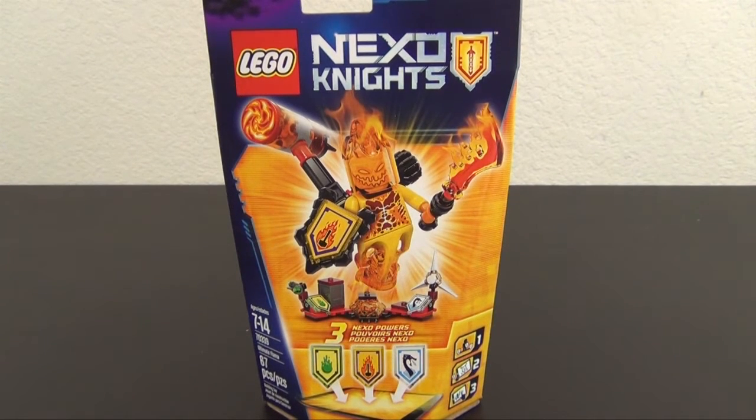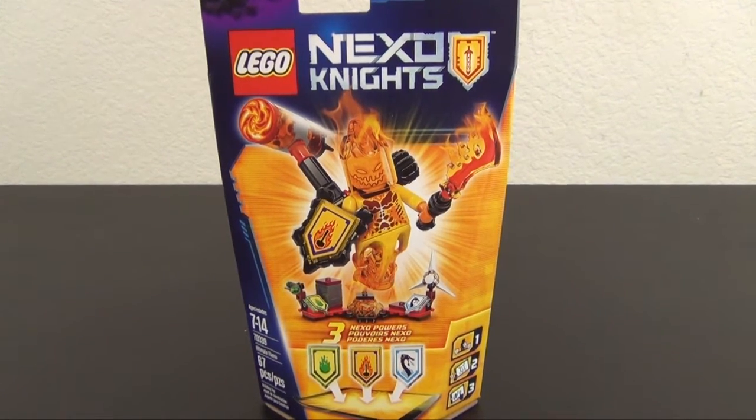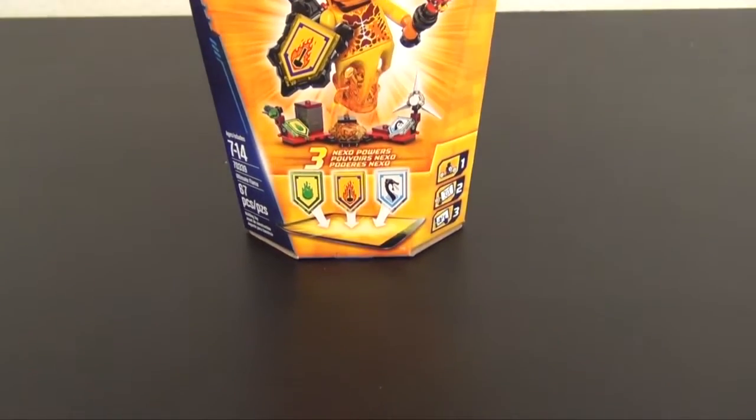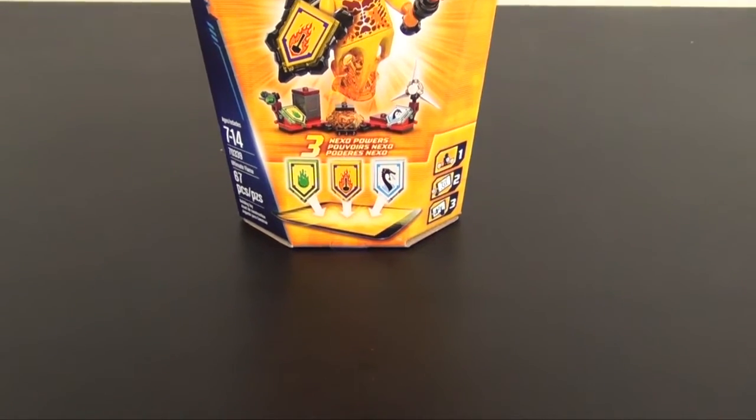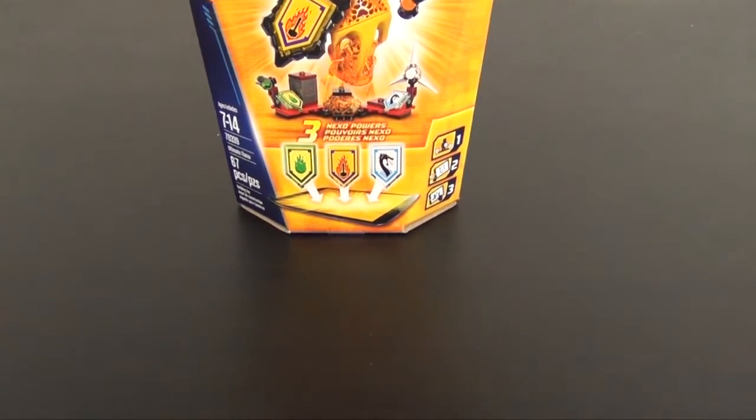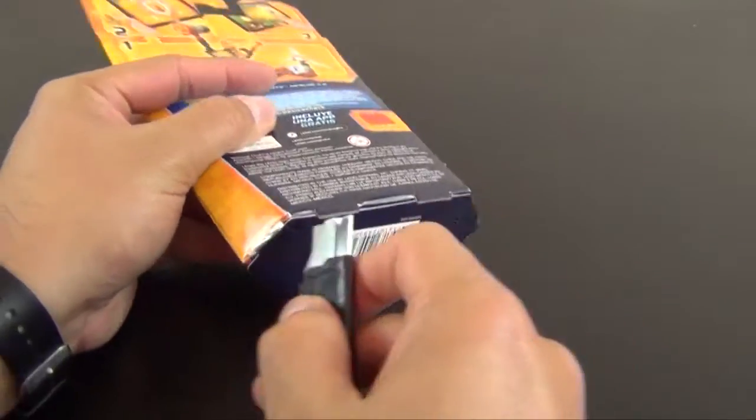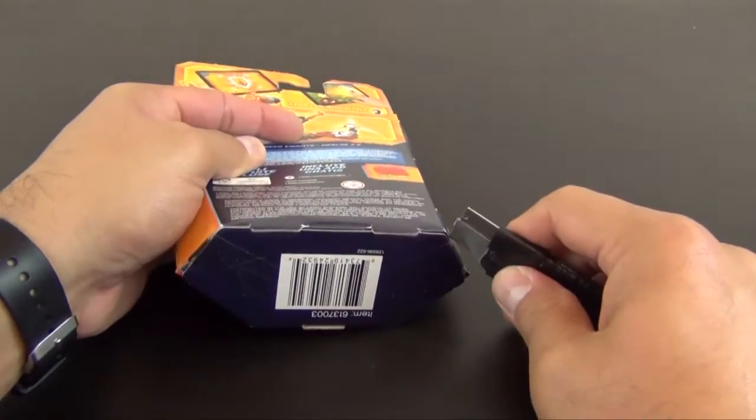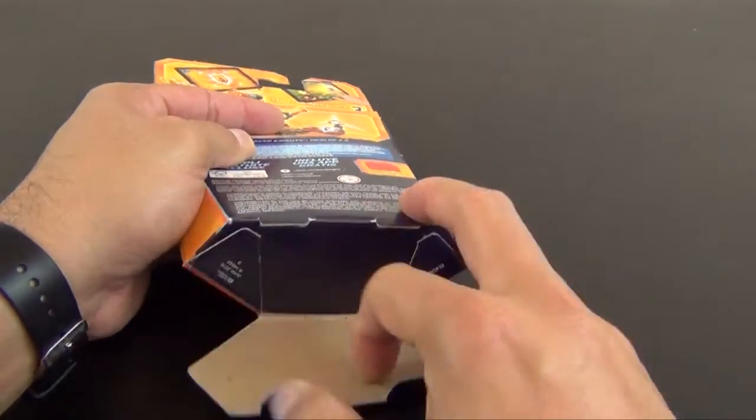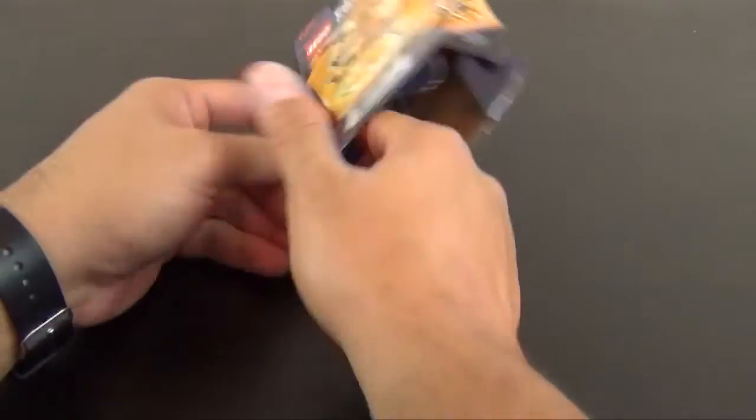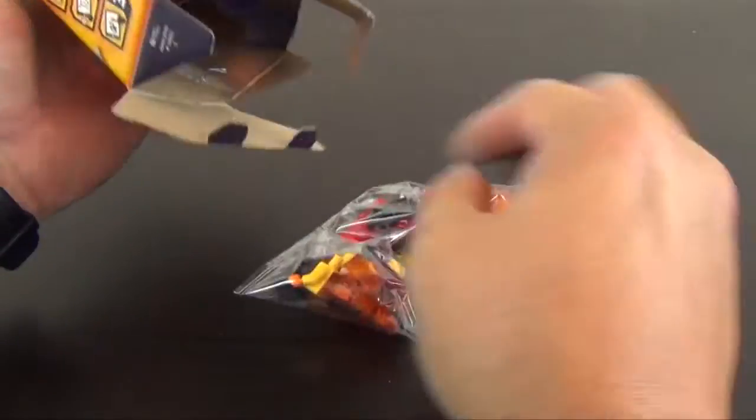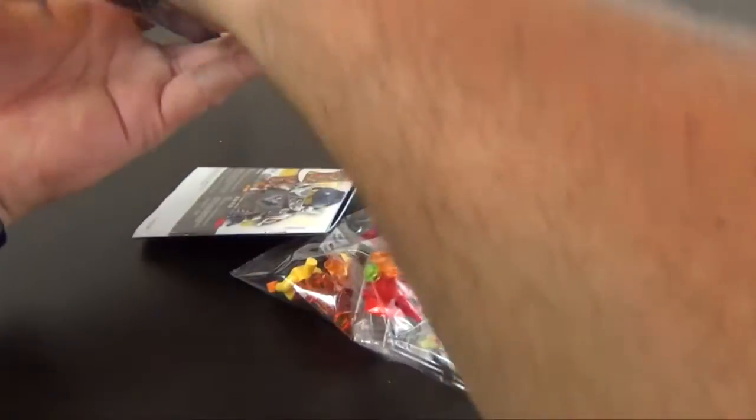So this is set number 70339, 67 pieces. Of course, we get the three Nexo Power tiles, and this is the final one that I'm building from the second wave of the Ultimate Nexo Knight figures. Go ahead and slice that open and dump out the contents.